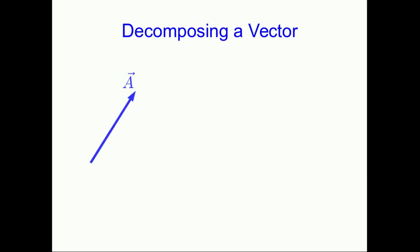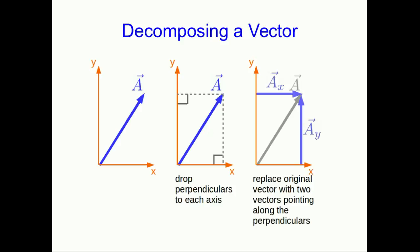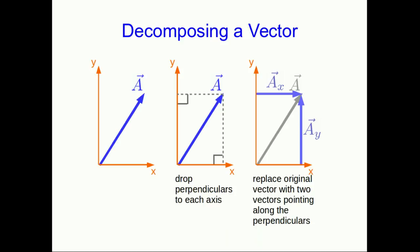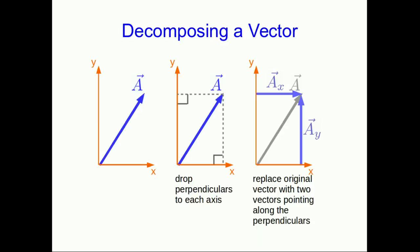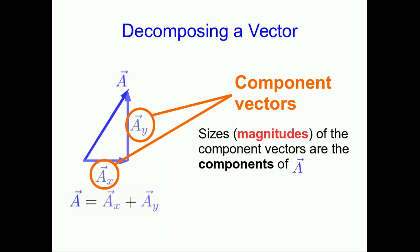We know how to think about motions parallel to our axes, so it's useful to take a two-dimensional motion and think of it as two simultaneous motions, one parallel to each axis. This involves decomposing vectors. Starting with some vector a — which could be a velocity, displacement, or anything — we impose axes, slide the vector so its tail is at the origin, drop perpendiculars onto each axis, and draw vectors along those perpendiculars. Those new vectors, ax and ay, are called the component vectors of a, and they add up vectorially to give the original vector a.